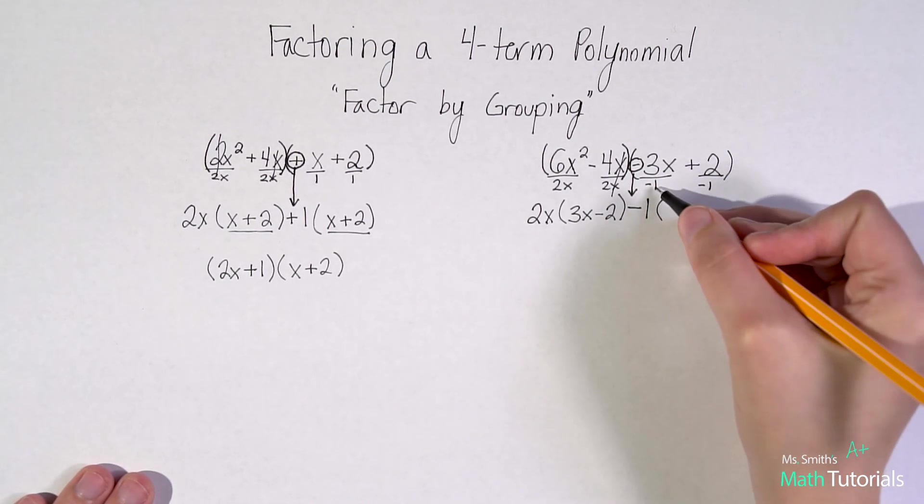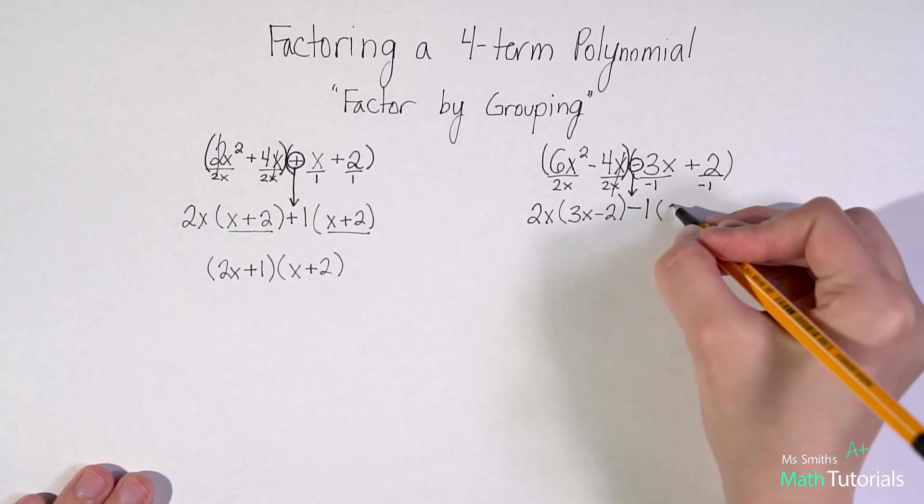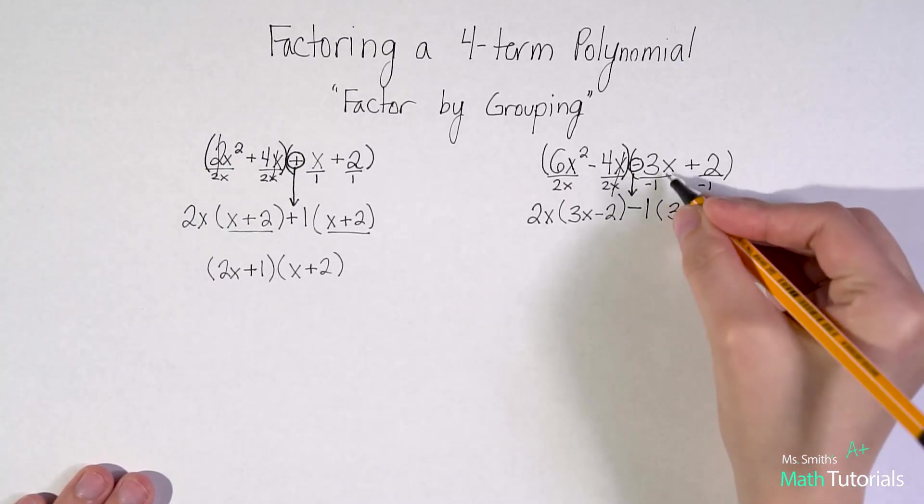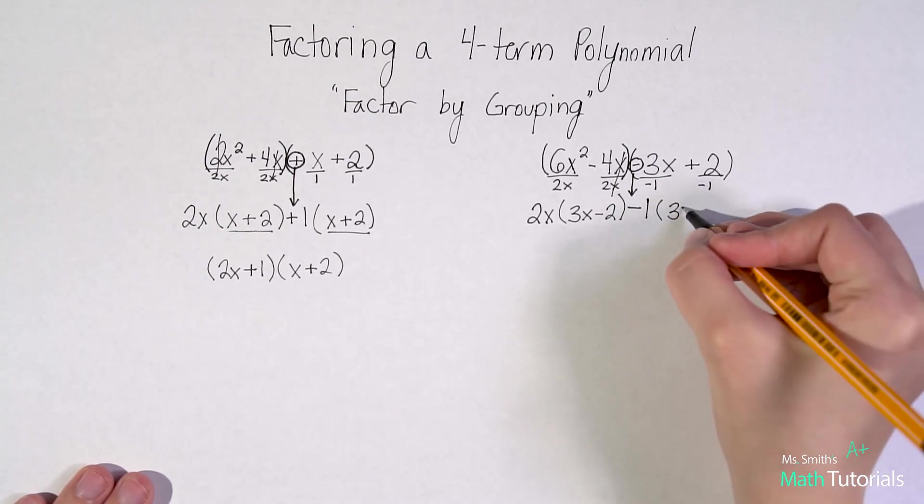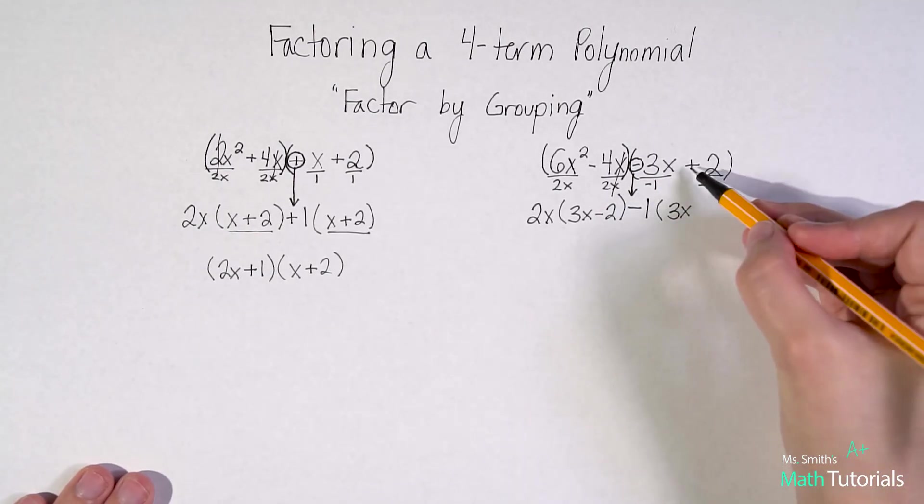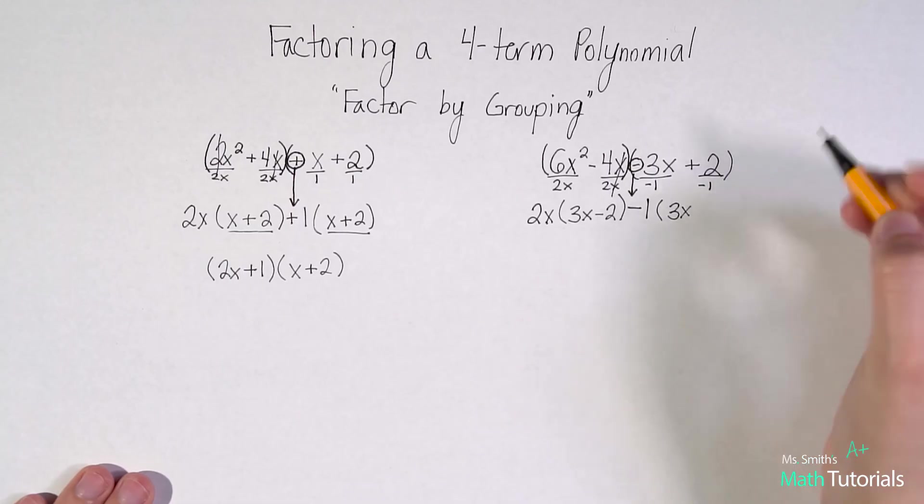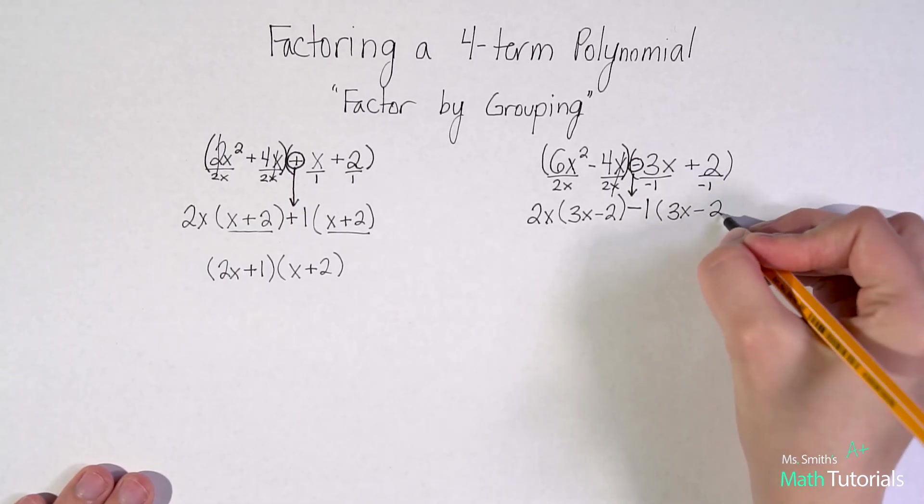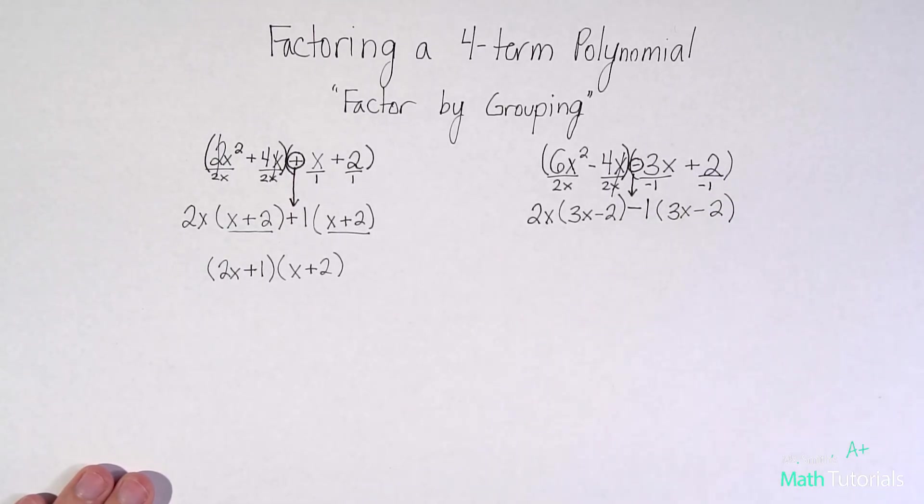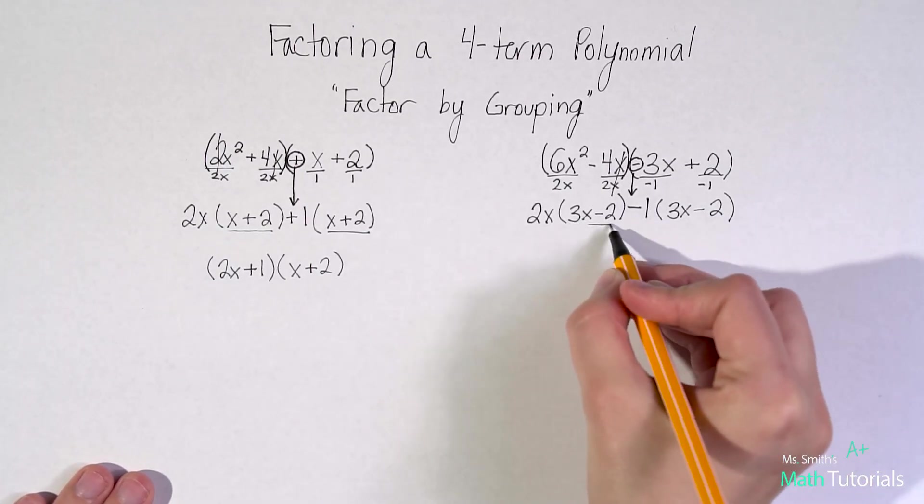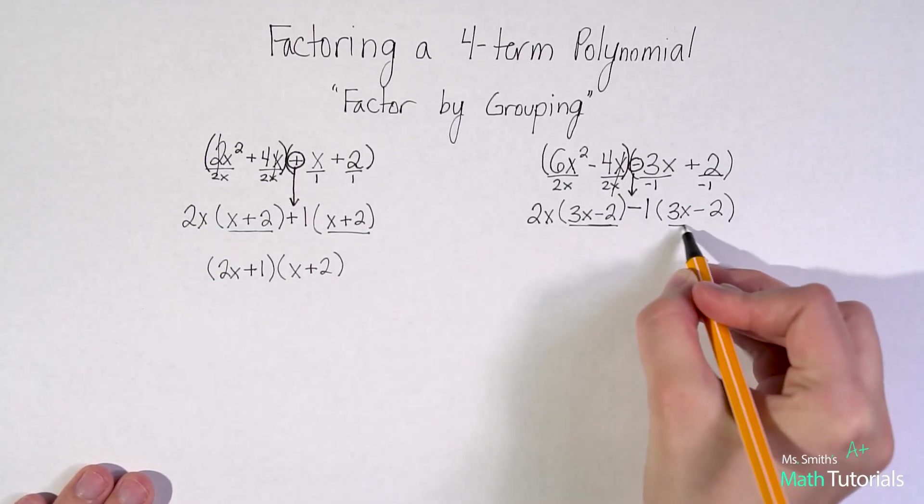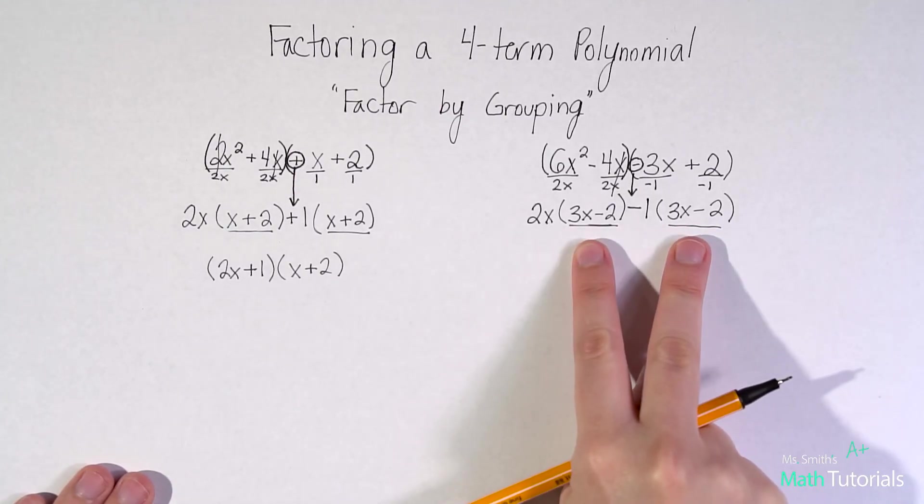So let's divide out that GCF of negative 1. Negative 3 divided by negative 1 would just be positive 3. X, and there's nothing to combine it with down here, so it's just x. Positive 2 divided by negative 1, that would be negative 2, end parentheses. So at this point, I can check myself, do I have twins? Have I created twins? Yes, these have to be exactly the same. Same signs, same numbers, same letters, everything. They are the same.